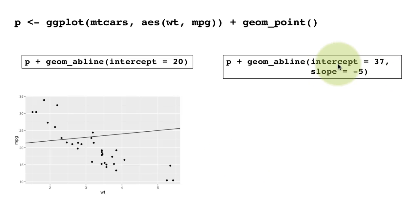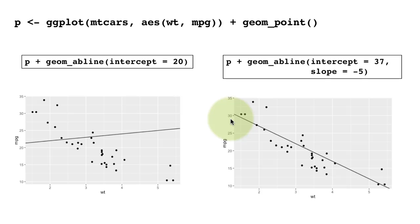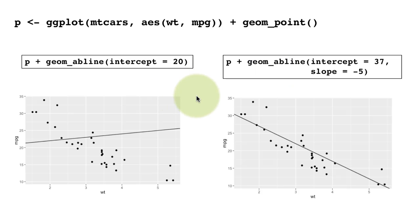Here we show an abline with intercept at 37 and slope of minus 5. Because the slope is negative the line goes downward. The intercept appears a little above 30 but if you extended the x-axis down to 0 you would see the line actually meets the y-axis at 37. We might not use abline as much, but geom_hline and geom_vline will be used frequently to annotate graphs and highlight specific things.